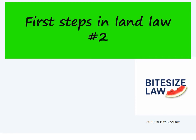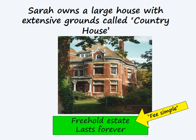Let's have a look at another example, and this time introduce interests in the land as well. We have Sarah, who owns a large house with extensive grounds called Country House, and Sarah is the owner of the freehold estate, which continues on forever. And as a landowner, she can grant rights over her land to other non-owners.